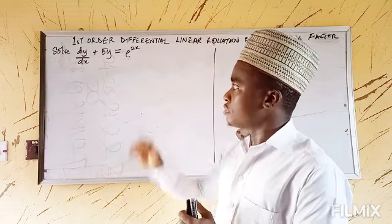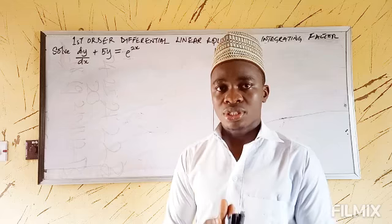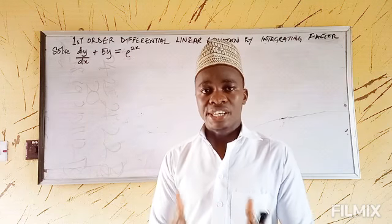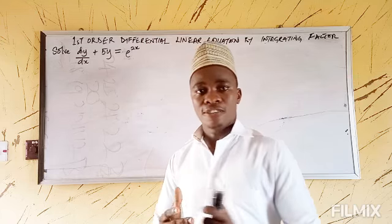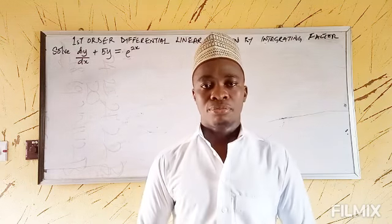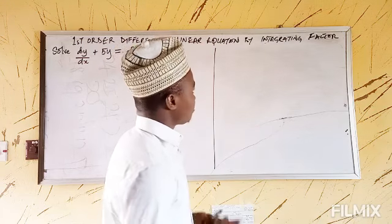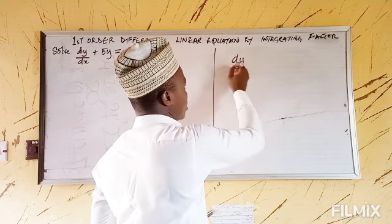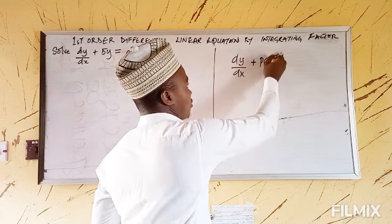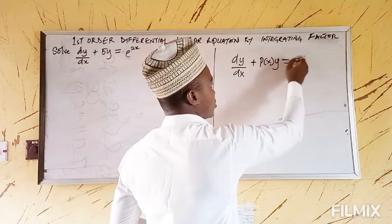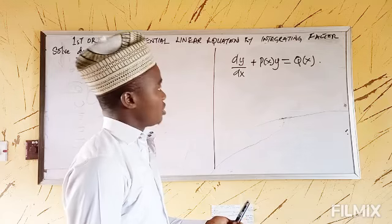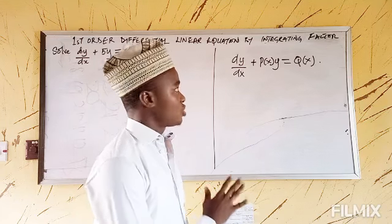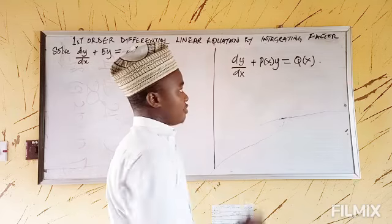Now, before we can solve the problem here, I'd like to introduce the general form of a linear equation — so that when you see any form of equation, you could easily relate it to the general form. So we have an equation like this: dy/dx plus P(x)·y equals Q(x). I call it the general form of a linear differential equation, because we can see the differential coefficient there.